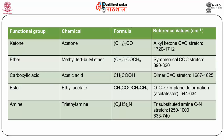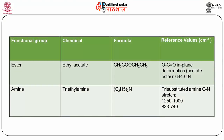The next slide continues with examples for ketone, ether, carboxylic acid, ester, and amine. For acetone (CH₃)₂CO as an alkyl ketone, C=O stretching values have been shown. Similarly, for ether, carboxylic acid, ester, and amine, the names, formulas, and reference peak values are given. The amine example is triethylamine (C₂H₅)₃N, a trisubstituted amine, with C-N stretch values given. Isyl acetate and triethylamine are illustrated with their formulas and characteristic values.